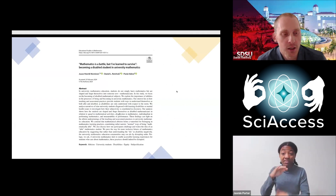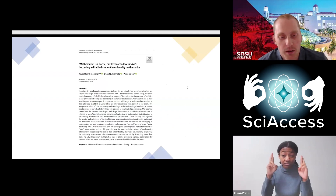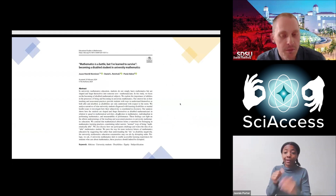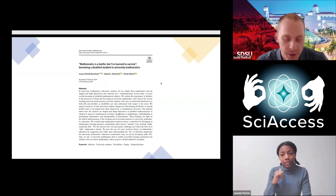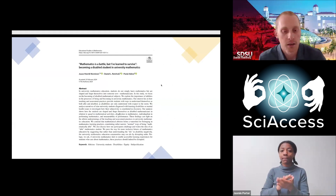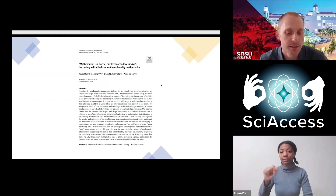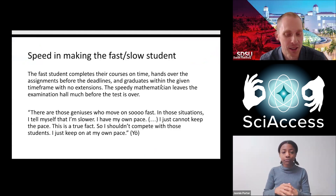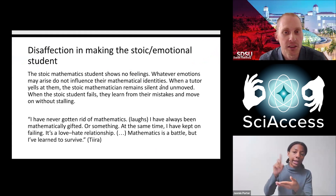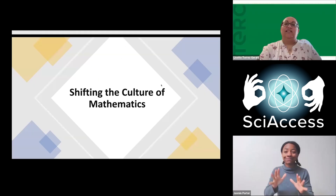There are a handful of slides from a paper that colleagues and I recently wrote called 'Mathematics is a Battle, But I've Learned to Survive: Becoming a Disabled Student in University Mathematics.' This is open access and looks at intersections of disability and math identity. I'll drop that link for folks — if you're interested, check it out later. We're going to skip ahead to shifting the culture.